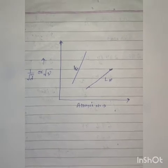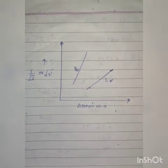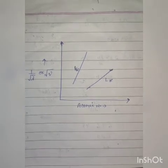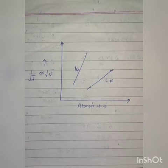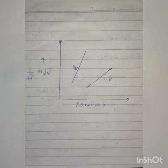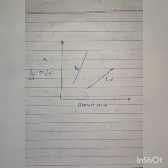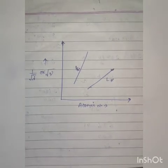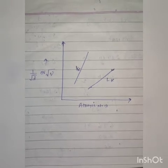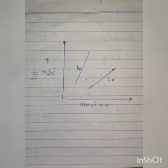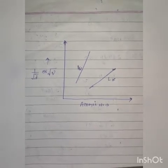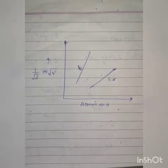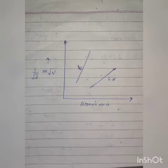He used these elements one by one as the target in an x-ray tube and measured the wavelength of k-alpha and l-alpha x-rays of these elements.